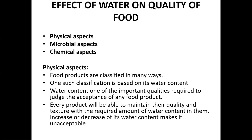For example, when you go to the market to buy apples, you choose the ones that are very fresh and juicy. Similarly for methi, spinach, or coriander, you choose the ones that look very green, fresh, and juicy. The water content is a very important quality parameter to decide the quality. For cucumbers, you would not choose ones that are shrunken and have lost moisture content.